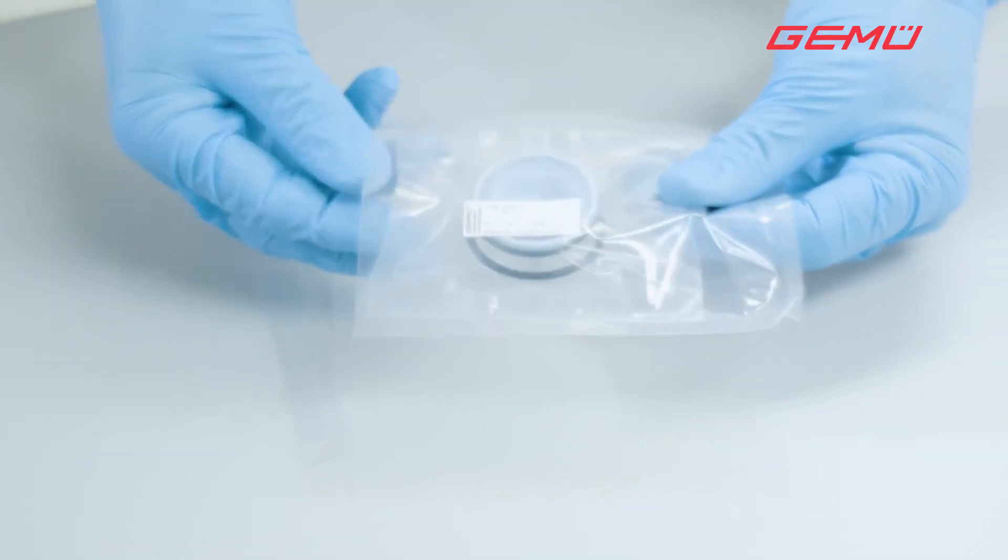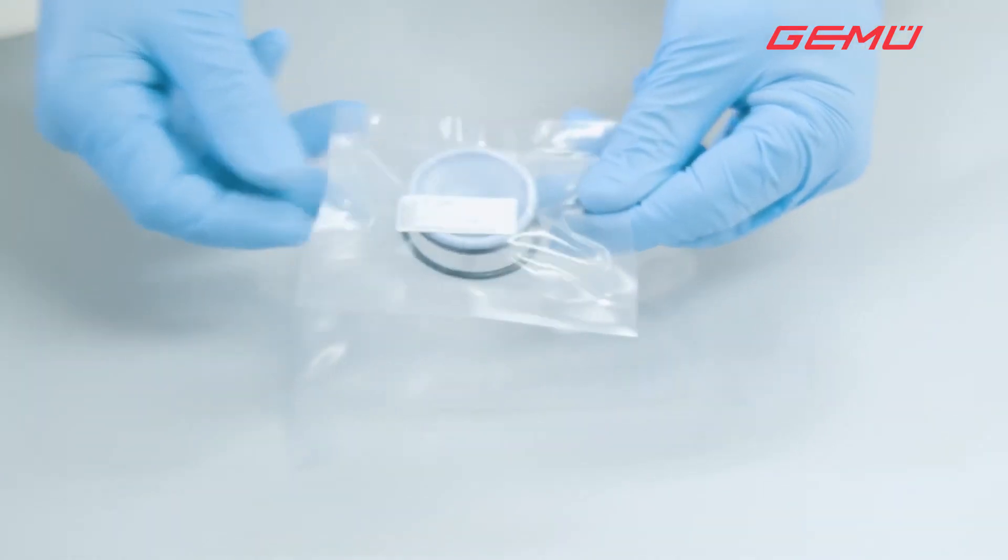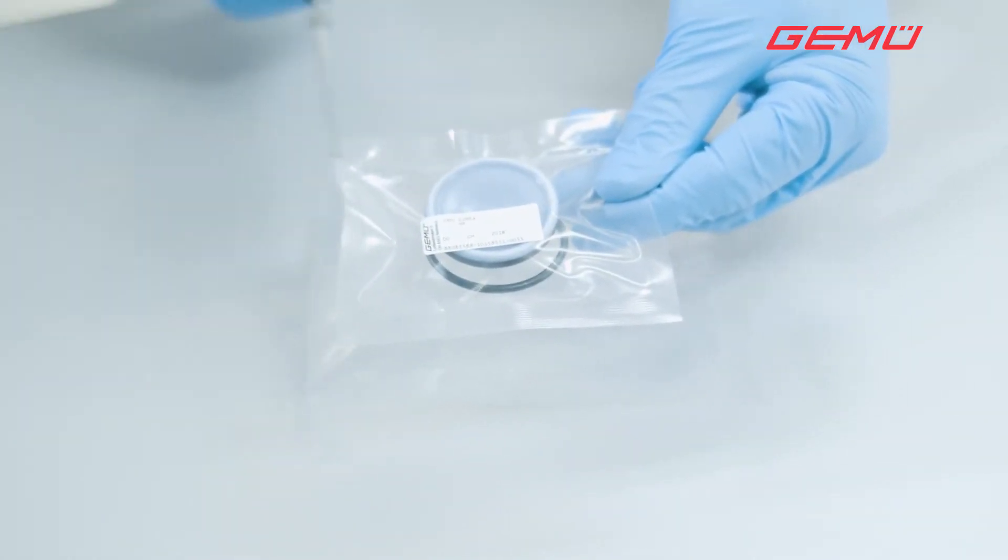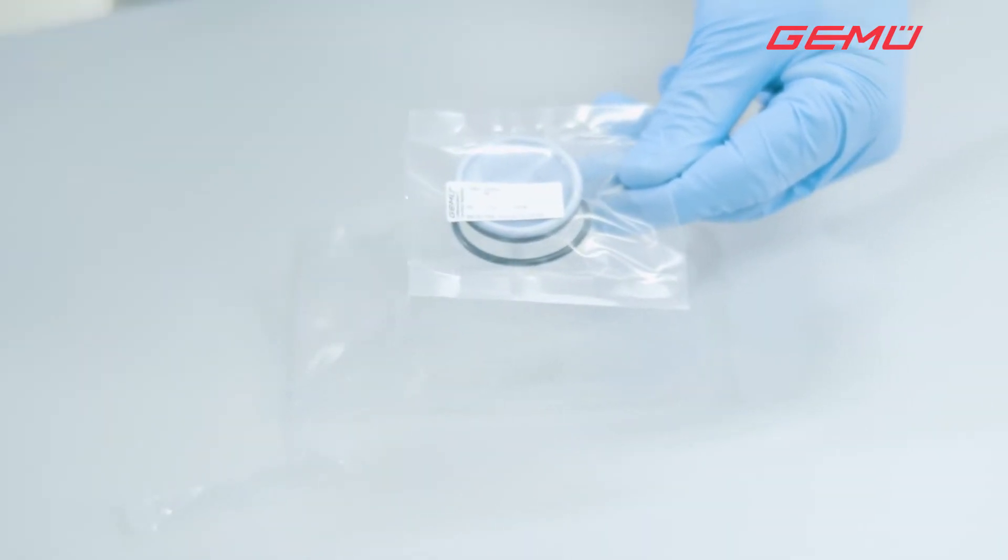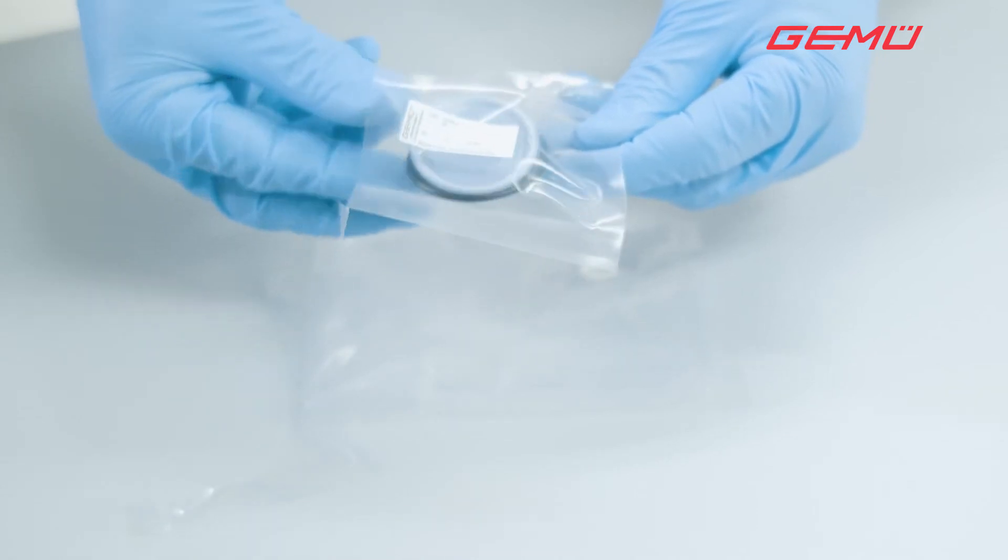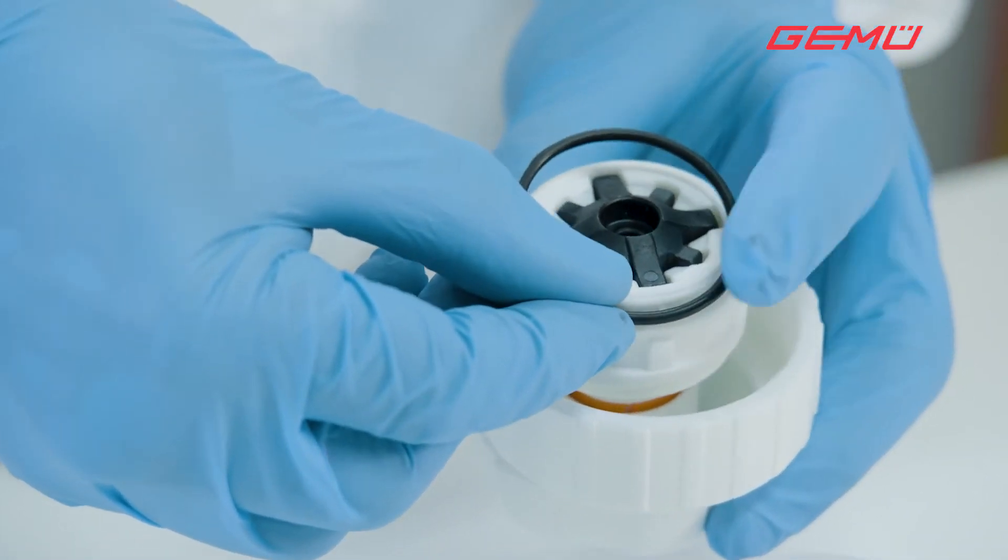Carefully open the double protective packaging and remove the spare parts. Now insert the new o-ring into the guide groove.